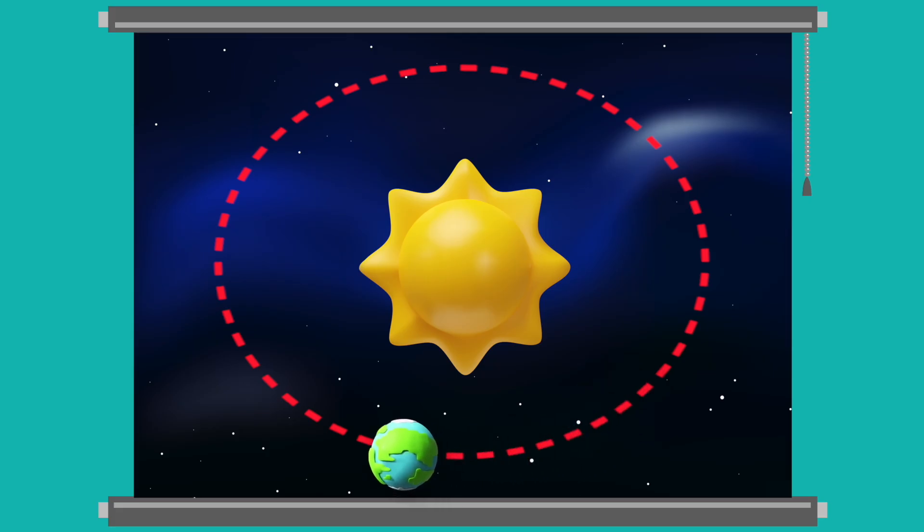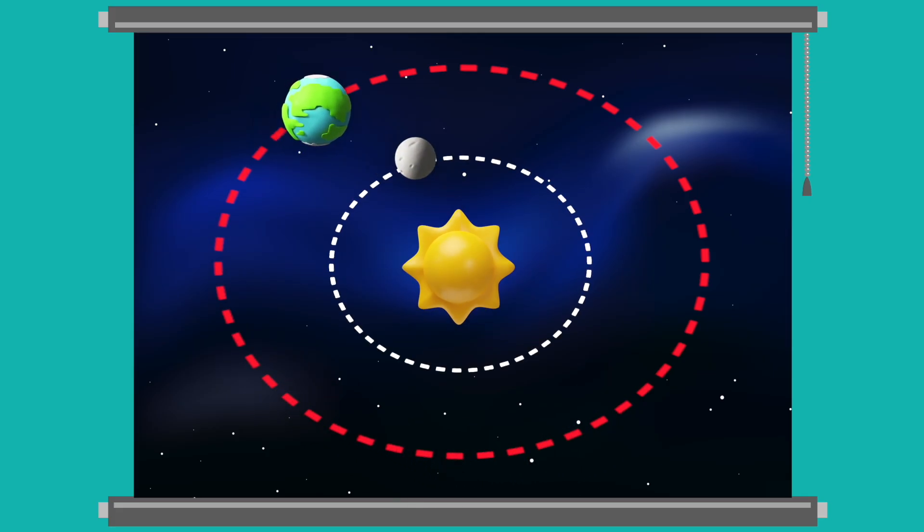Some planets move around the Sun faster than others, like Mercury here. See how much smaller its orbit is? It only takes Mercury 88 days to move around the Sun. That's just about three months, much less than an Earth year.